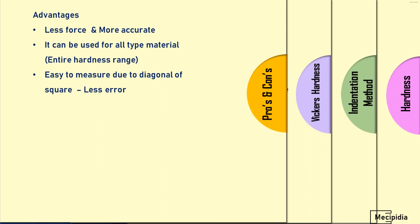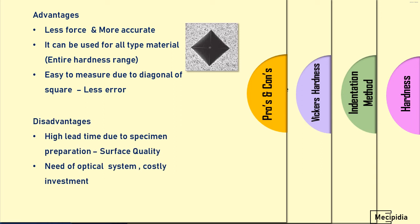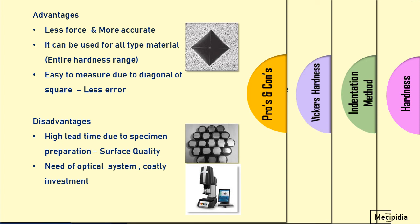Coming to the disadvantages: first, high lead time — because in Vickers hardness the indenter is very small, the specimen needs to be carefully prepared and only then can it be measured. So there is high lead time to prepare the specimen and ensure surface quality. Second, an optical system is required to measure the indentation accurately since it is very small and cannot be measured by the naked eye accurately. This requires a costly optical system, which is a significant investment.